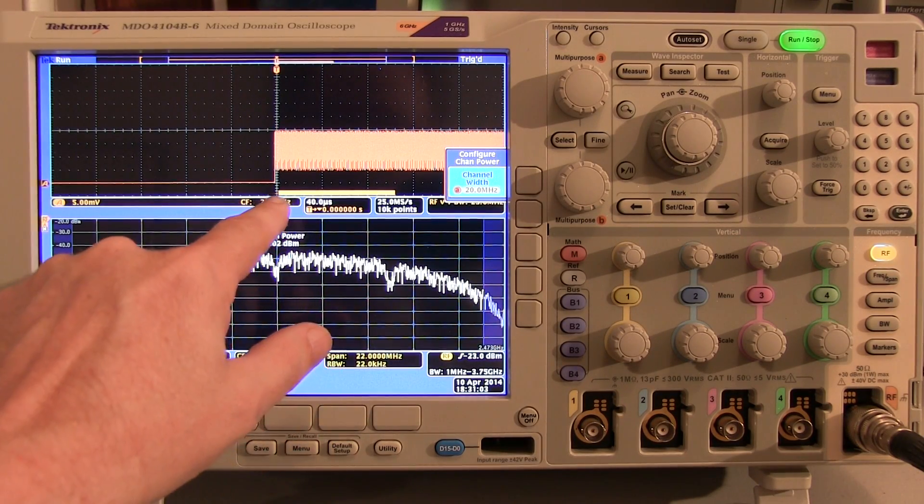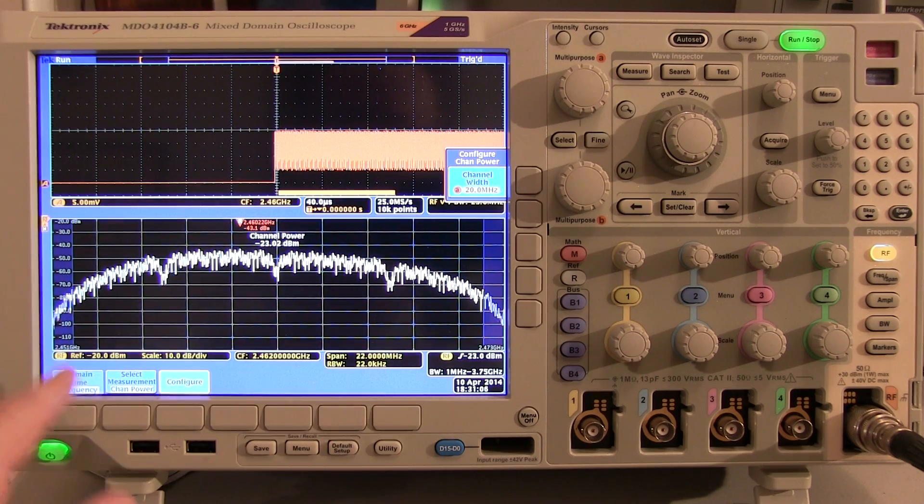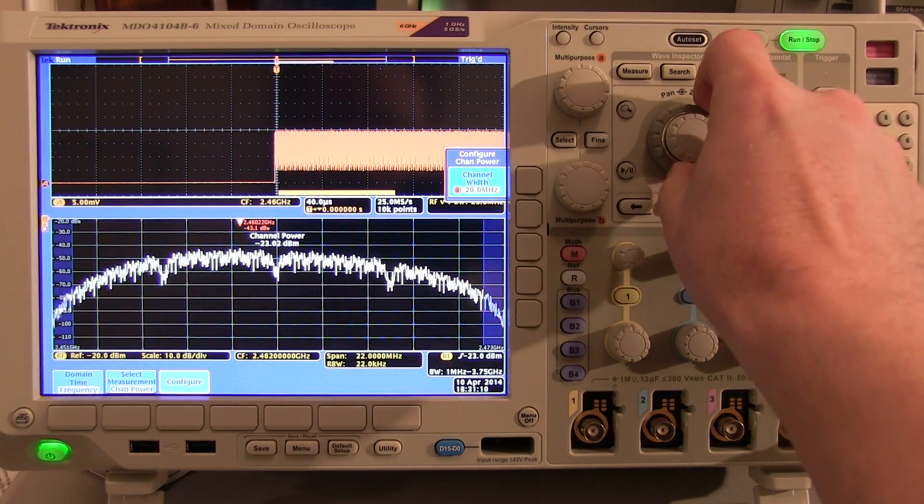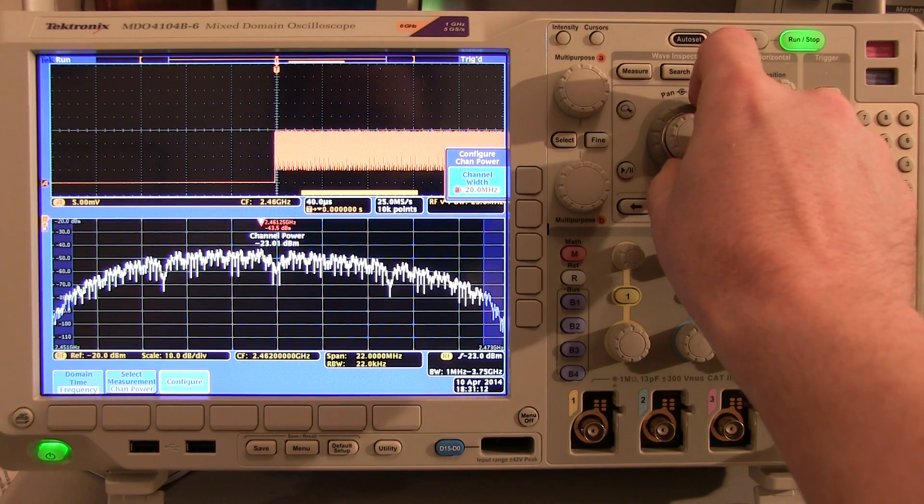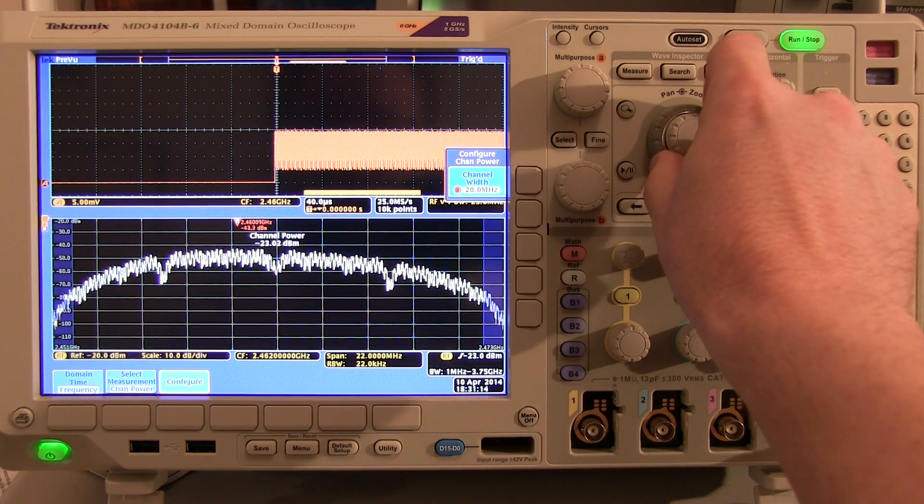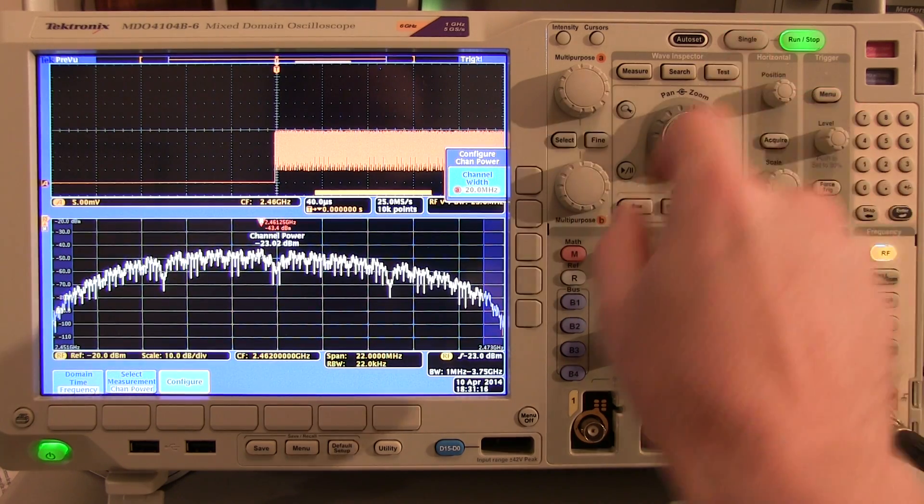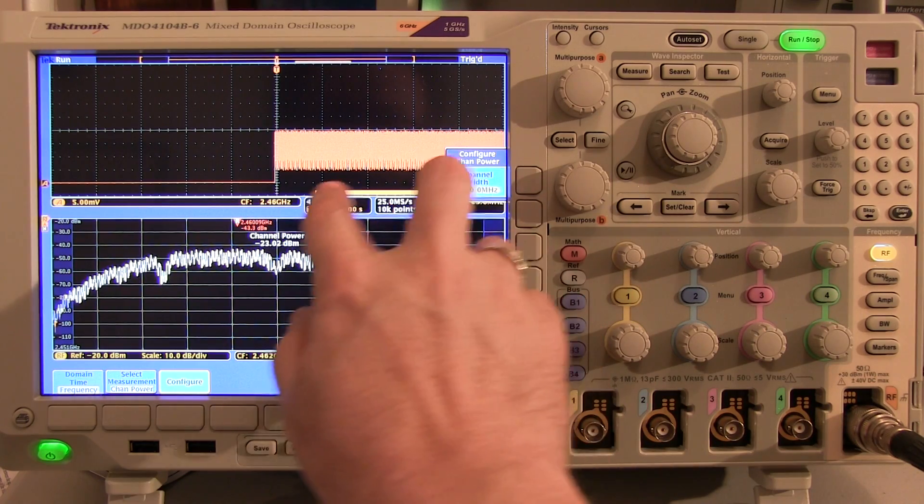So I can see where that measurement is being made. It's right after the burst came up. And now I'm making an accurate channel power measurement. We can position our measurement to be anywhere within the burst that we like. But we can see we can get nice consistent results as long as we're making a measurement within that burst.